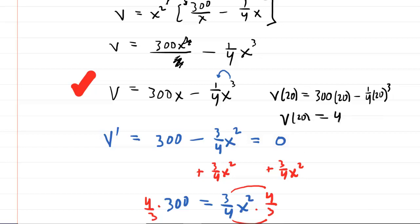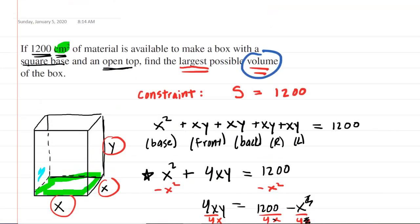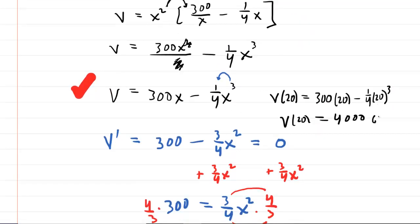So this would represent the maximum possible volume. And in terms of the unit, since the measurements were in terms of centimeters, then our volume would come out to centimeters cubed. Notice we use a cube on the centimeters because this is a volume problem.